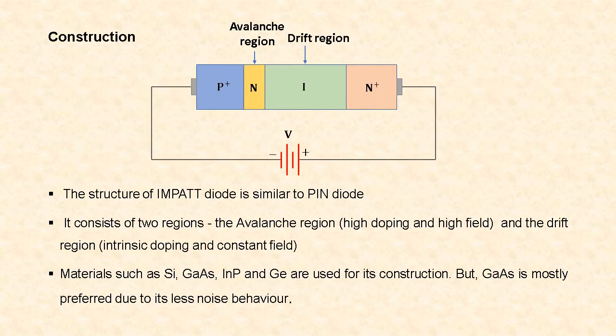Now let us see the construction of the IMPATT diode. The structure of this IMPATT diode is similar to a PIN diode. It consists of a P+ region, N region, I region, and N+ region. Mainly it consists of two regions: the avalanche region and the drift region. The avalanche region is highly doped and has a high field. The drift region is intrinsic and has a constant field.